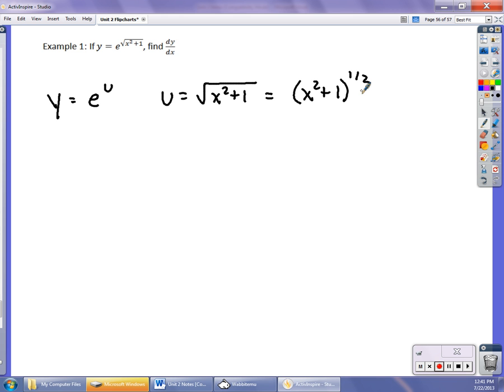I'm doing this because it's chain rule within chain rule. y prime is what I had up there a minute ago. It's e to the u times du dx. I can put in the square root of x squared plus 1 right there, but I've got to find du dx.